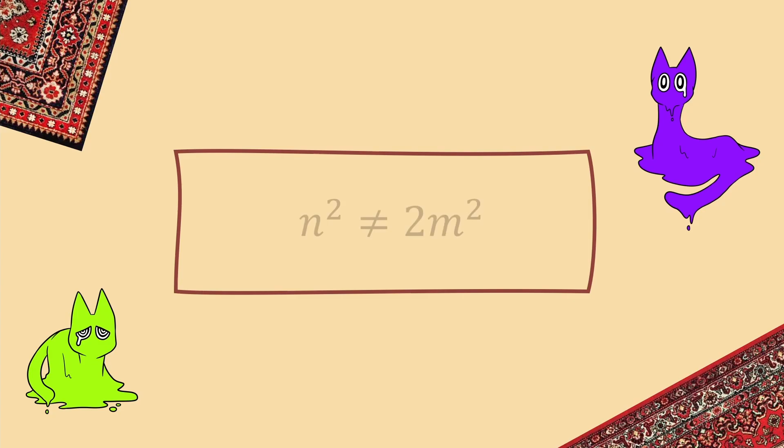as we established before. There are no two integers which fulfill the equation n squared equals 2m squared. For the puzzle, this means that there is no carpet that can fulfill your friend's requests.